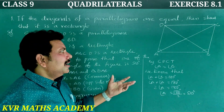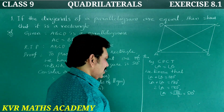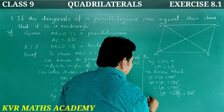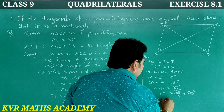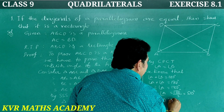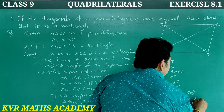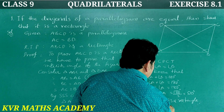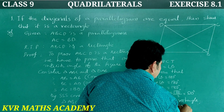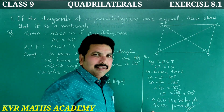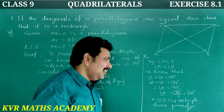Therefore ABCD is a rectangle. Hence proved.